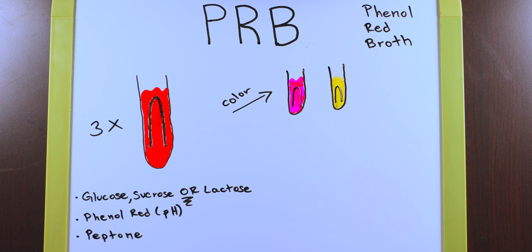If you do have a color change from red to pink, this indicates to us that the pH in the broth is above 7.4 and indicates that we have alkaline end products.